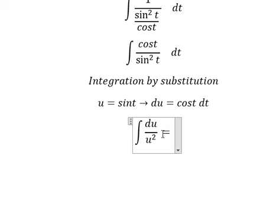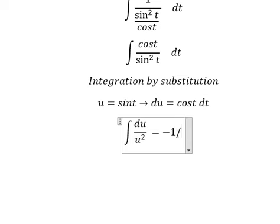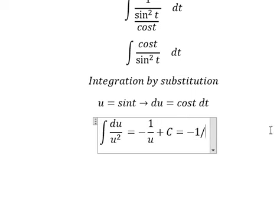The antiderivative of this one is negative 1 over u, and I will put the constant c. u is sine t.